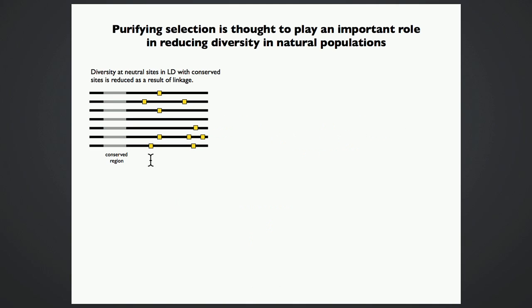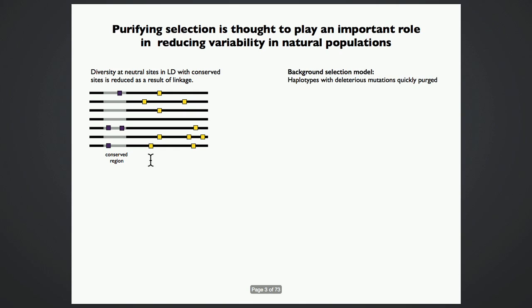Now, purifying selection is thought to play an important role in shaping genomic diversity, and specifically, we understand its major effects as the reduction of diversity in conserved regions. This reduction happens not only at conserved sites, but also at closely linked neutral regions. And the mental picture that we have that explains this is whenever deleterious variants arise in the population, selection will act to quickly remove these alleles, and in doing so, it will also remove any neutral variants that are accumulated in close linkage before recombination can move them to a better background.